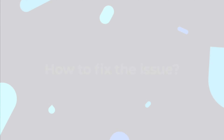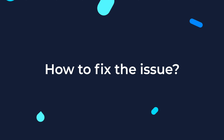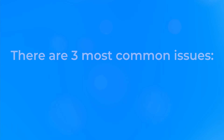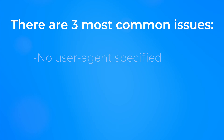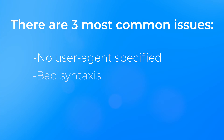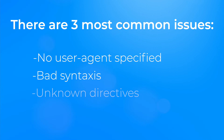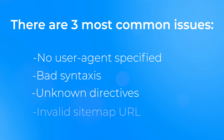How to fix the issue? There can be several reasons that may make your robots.txt file invalid, but all of them can be easily fixed. The most common of them include: no user agent specified, bad syntaxes, unknown directives, and invalid sitemap URLs.